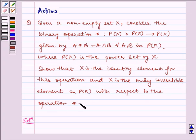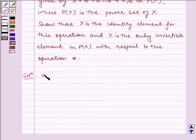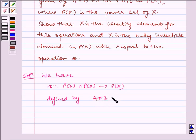Now let us write the solution. We have function star from P(X) × P(X) to P(X) defined by A * B = A ∩ B.